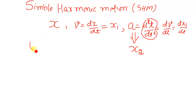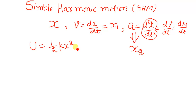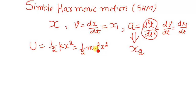Potential energy is given by two expressions: it is also given as ½kx², where k is called the elastic constant, stiffness constant, or spring constant. It can also be written as ½mω²x², where omega is the angular frequency.